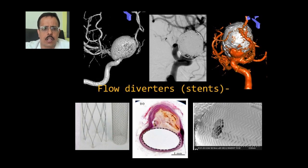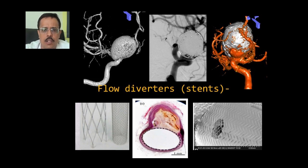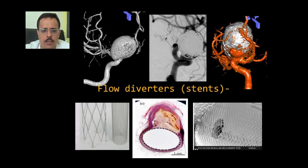The recent advance has been flow diverter placement. This is a patient with a giant ICA aneurysm who came with subarachnoid hemorrhage. We coiled the aneurysm in emergency and left the neck of the aneurysm, which was difficult to coil at that stage. This post-coiling 3D image shows the residual base of the aneurysm.